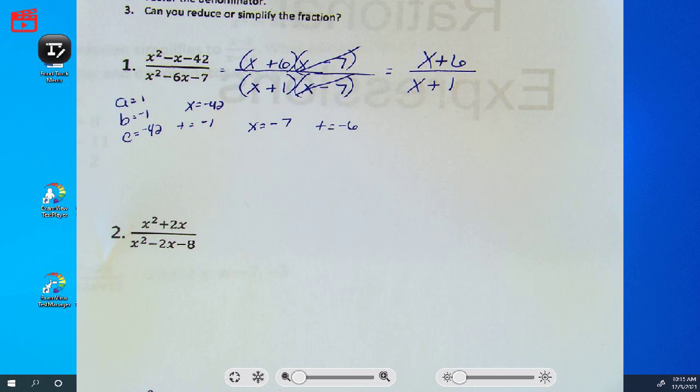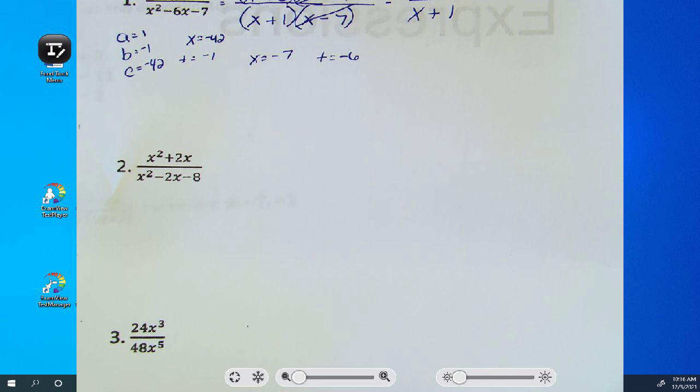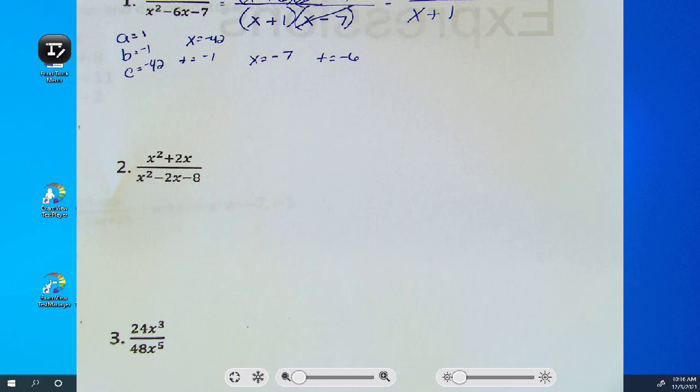Number 2. It threw some people for a loop. They tried to factor using difference of squares from the top. First of all, there's a plus sign there. So that's the difference of squares. Second of all, I see something in common first. What's in common here?